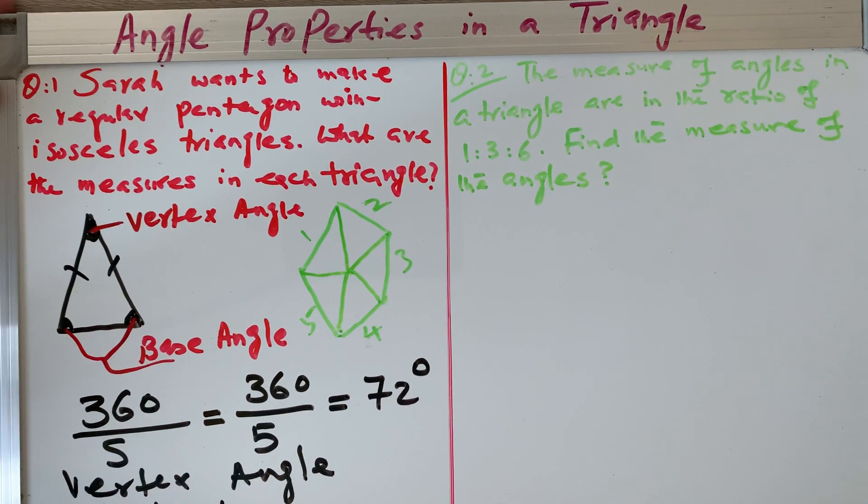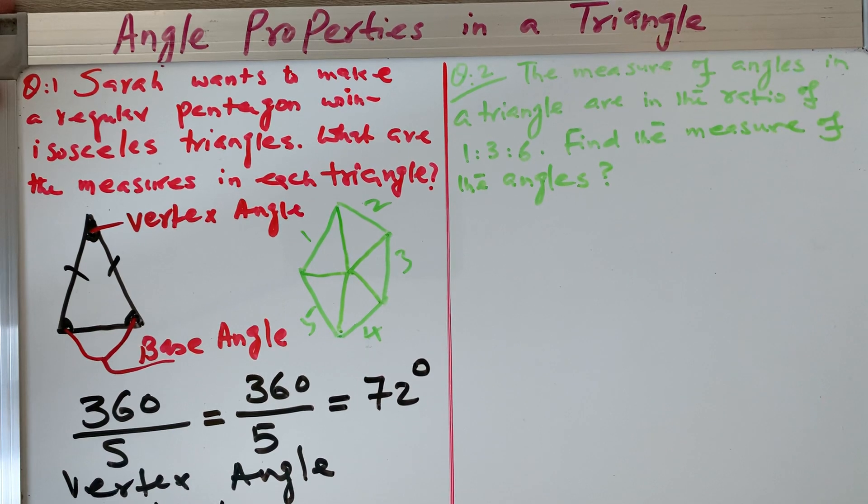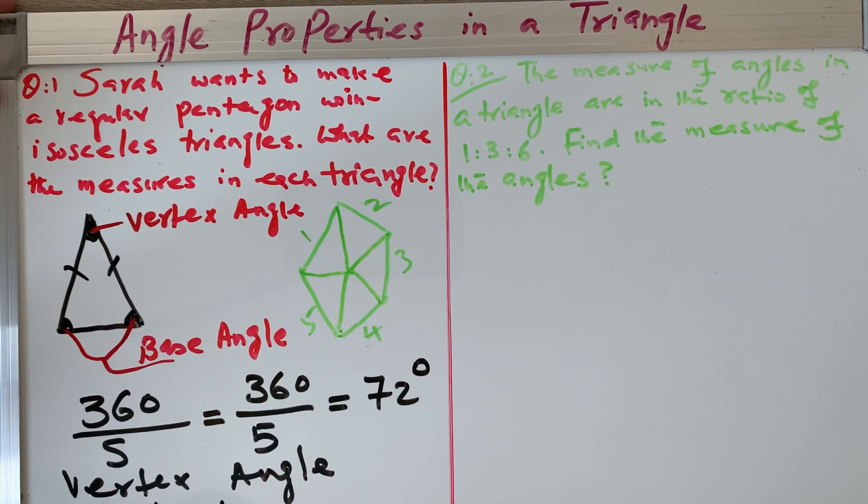Minus 72 divided by 2. So 180 minus 72 divided by 2, that becomes 54. Because the angles will be equal, so I divide it by 2.